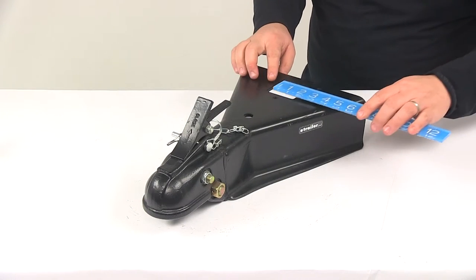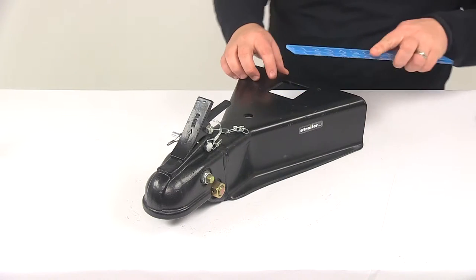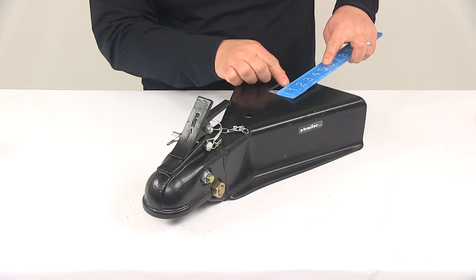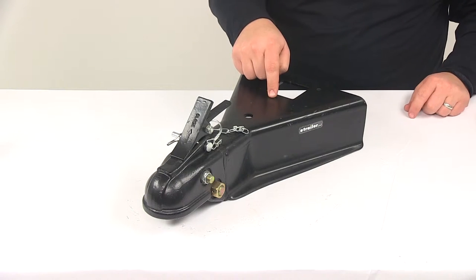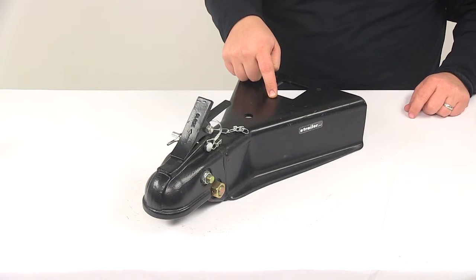The area back here for your utility jack is going to measure two and one quarter by two and one quarter. That's the size of the opening and it's going to have the three pre-drilled, pre-threaded mount holes for your square jack.